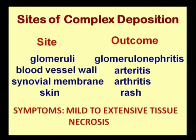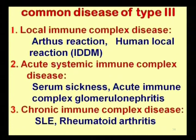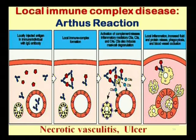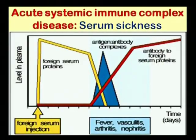The symptoms may range from mild to extensive tissue damage depending on where the immune complexes are deposited. Type 3 immune diseases are classified as local immune complex diseases, acute systemic immune complex diseases, and chronic immune complex diseases. The Arthus reaction normally occurs on the skin where the antigen is introduced, and higher amounts of IgG in the serum bind with the antigen creating an inflammatory response. For acute systemic immune complex disease, the classic example is serum sickness.